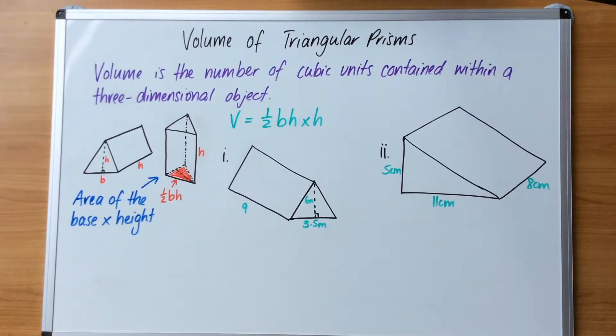Let's look at this question. We have a triangular prism with three measurements. The first thing we should be doing is labeling these so we know which one is which. I can look at this face of the triangle and I know that's the height of the triangle, that's the base of the triangle, and this is the height of the prism.